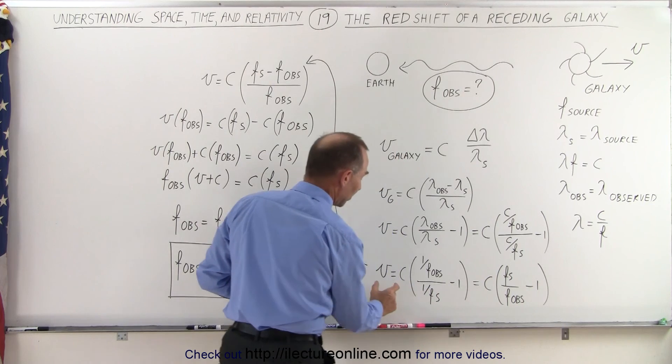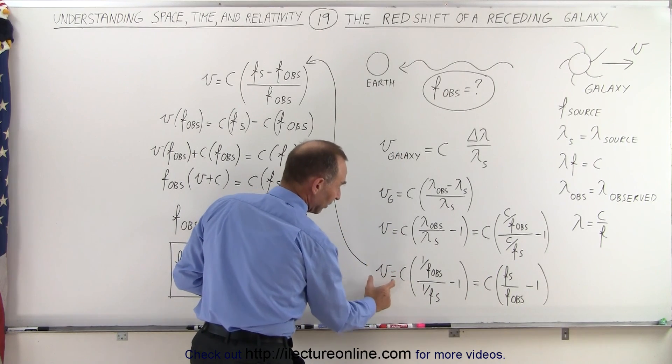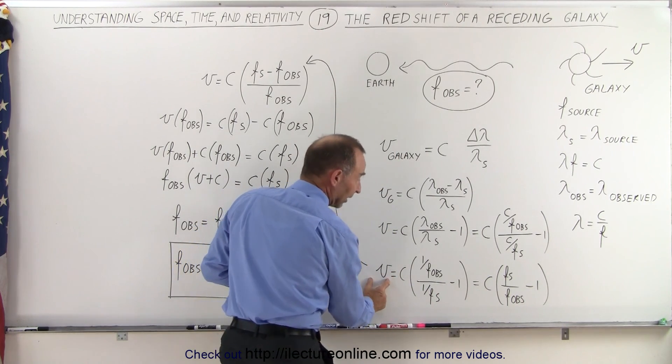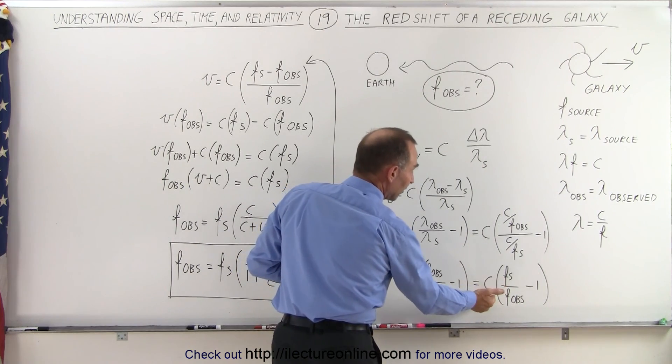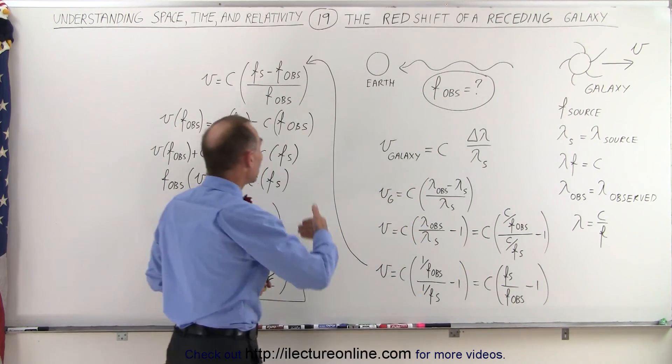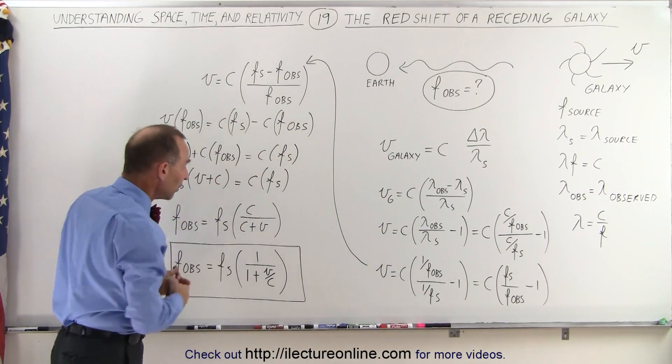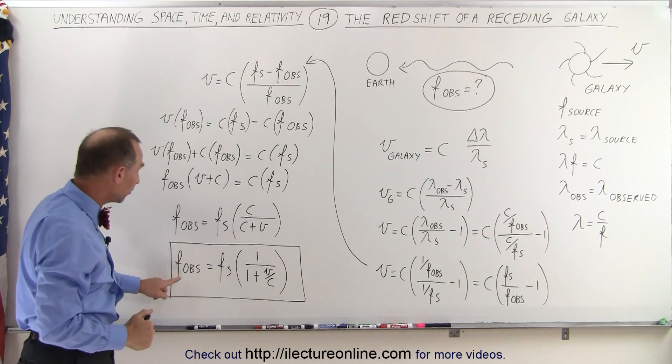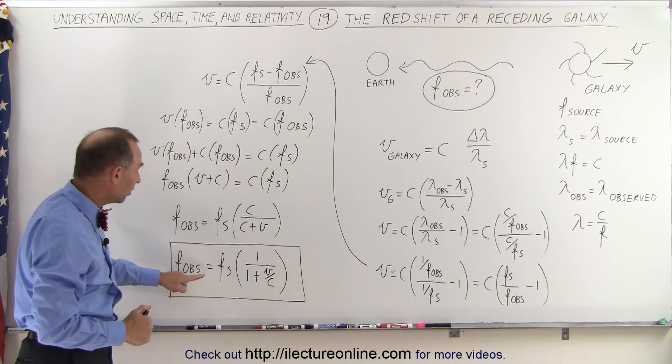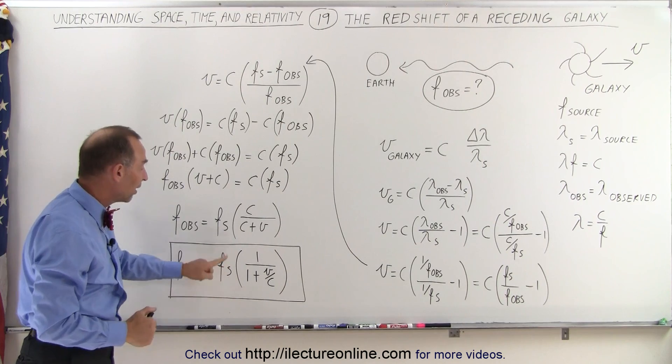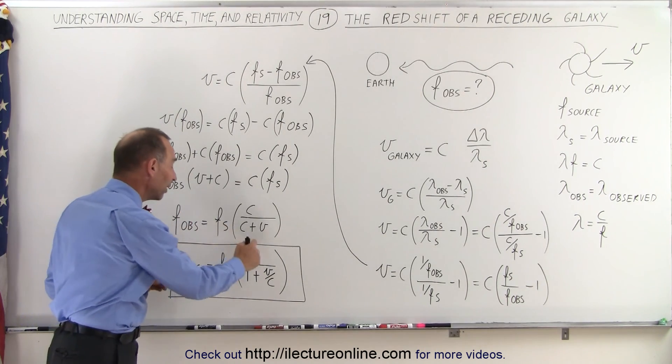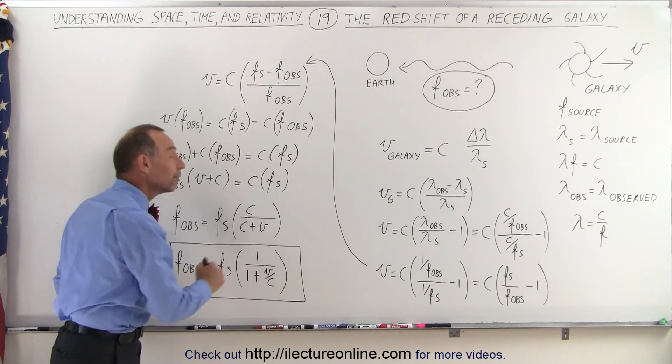Once we do that, we end up with an equation that tells us that the velocity of the object, like the galaxy, is equal to the speed of light times this ratio. With some manipulation, eventually we end up with this equation right here that tells us that the frequency of the observation is equal to the frequency of the source times the ratio of 1 divided by 1 plus V over C.